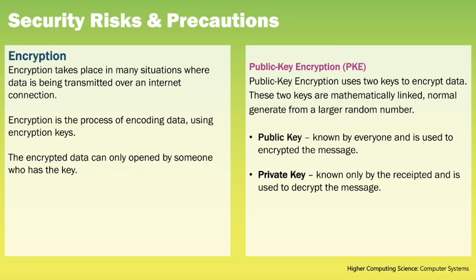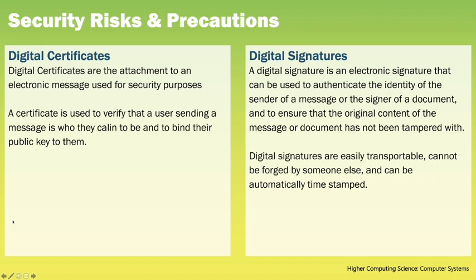Encryption takes place in many situations where data is transmitted over an internet connection. Encryption is the process of encoding data using encryption keys. One method is public key encryption, also known as asymmetric encryption. This uses two keys: the public key, known by everyone and used to encrypt the message, and the private key, known only by the recipient and used to decrypt the message. Digital certificates act as the equivalent of an electronic passport, allowing individuals or companies to securely exchange information knowing the identity of the other party. A digital certificate is exceptionally hard to forge and will have been issued by a trusted agency. Similarly, a digital signature is an electronic signature used to authenticate the identity of a message sender and to ensure the original content has not been tampered with.